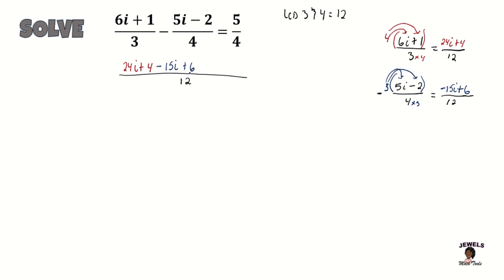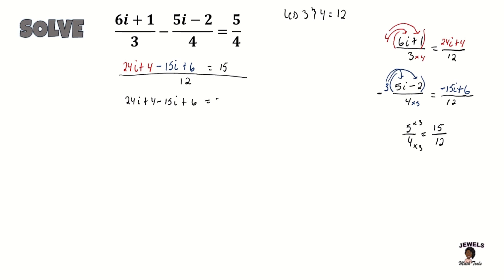Now we're going to change our last term as well. For our last term, we have 5 fourths, and we also have to change that to a denominator of 12. We know that 4 times 3 is 12, so 5 times 3 equals 15. So our equation is equal to 15. Now that everything has a denominator of 12, we're going to get rid of the denominator of 12 and work these terms out without a denominator. That's the good thing about finding your LCD — it helps you eliminate the denominator and work fractions out as usual.